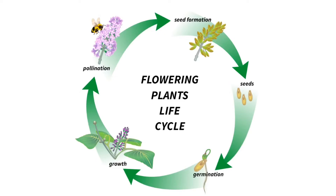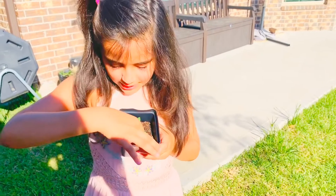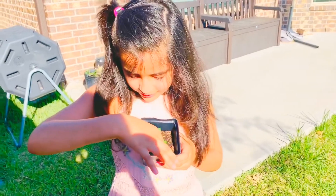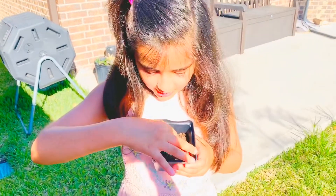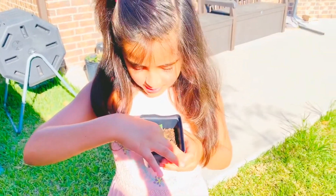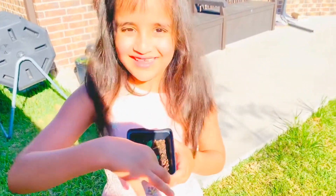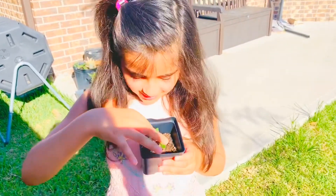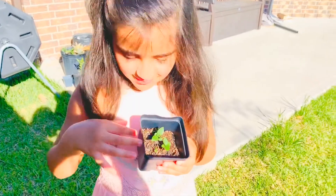When a seed gets proper sunlight, water, soil, and minerals, they start germinating. A seed will not germinate without all of these.